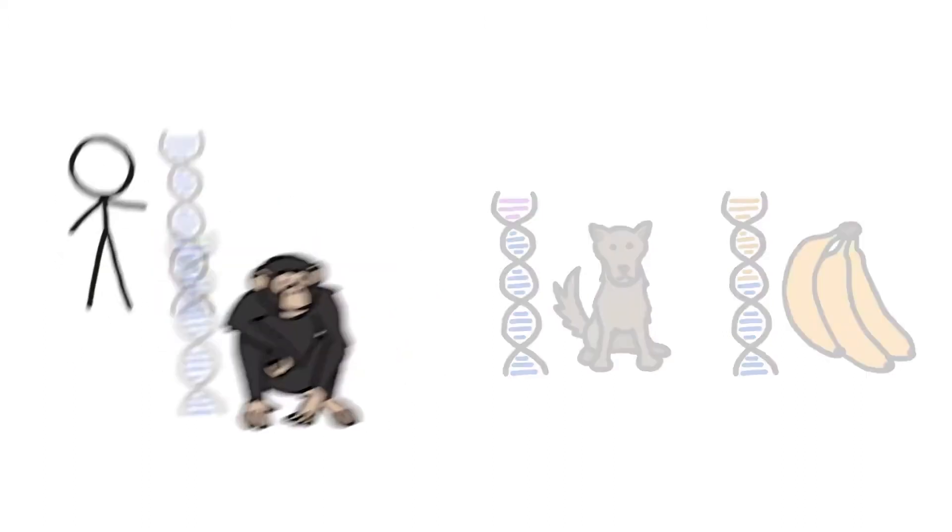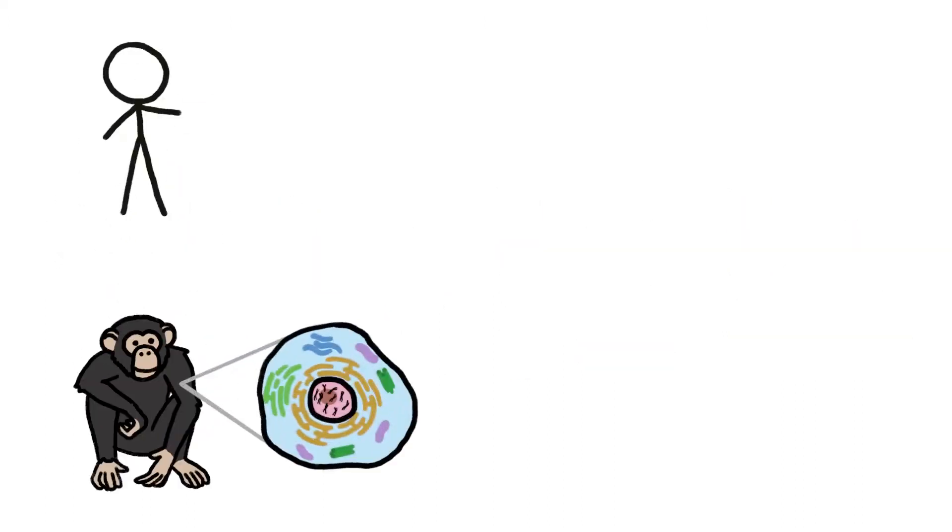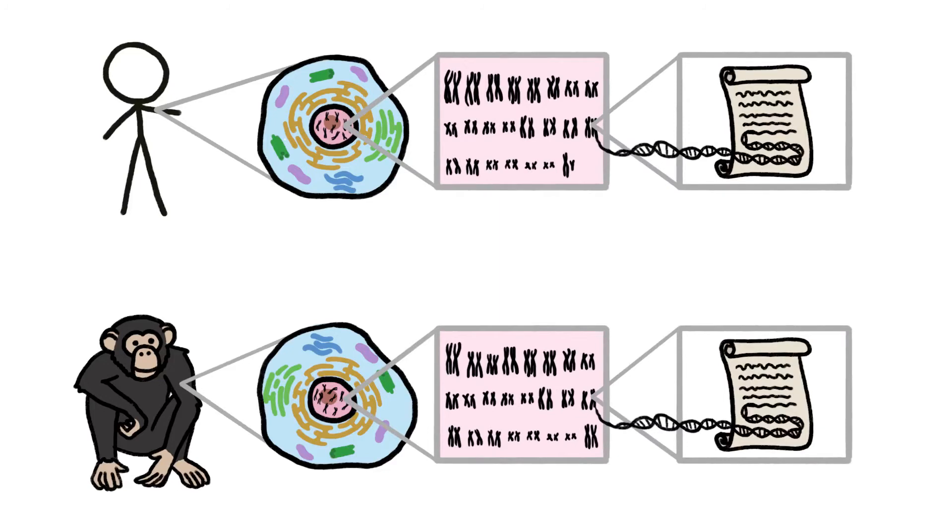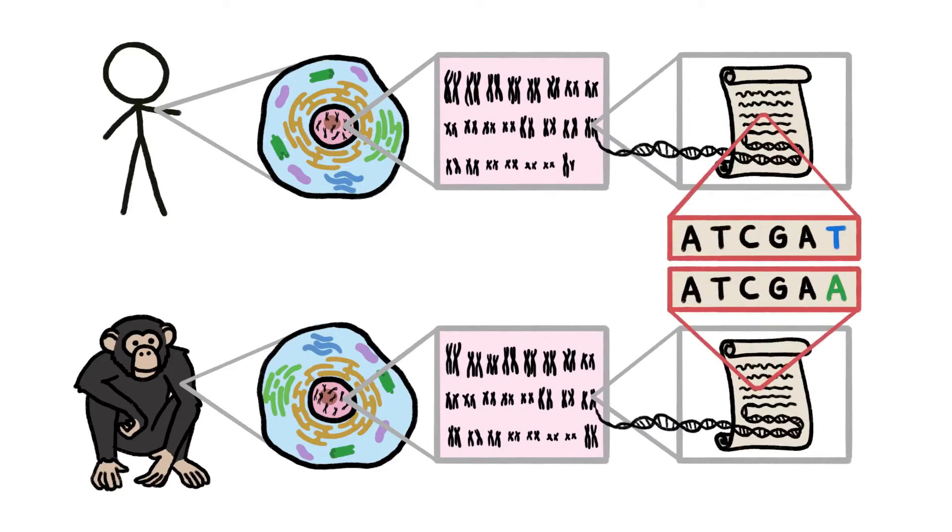Taken literally, those numbers make it sound like we could pluck one cell from a chimp and one from a human, pull out the tangled bundles of DNA known as chromosomes, unroll each one like a scroll, and read off two nearly identical strings of letters.